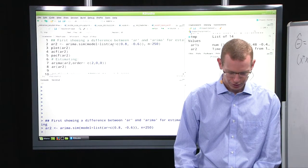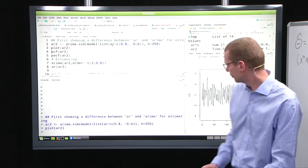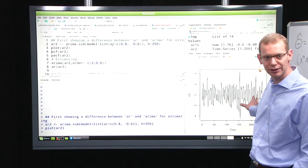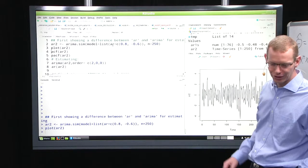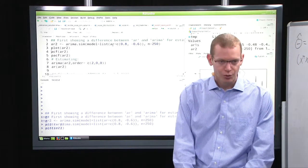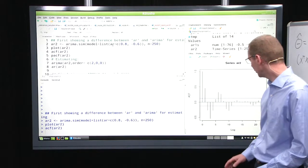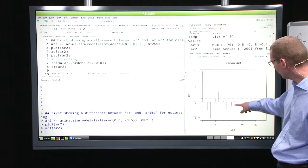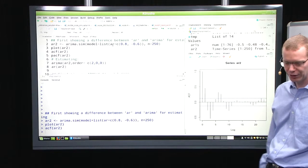Then I will first just plot the data as it looks like over here. Not so much to say about it. I'll plot the autocorrelation function, and what you can see here is a damped exponential wave.